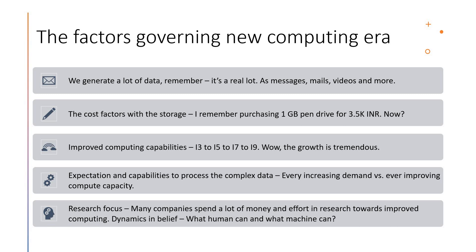The second factor is storage and the cost connected to it. I bought my first pen drive at 3,500 INR back in 2007, which was very expensive. But now with the same money you can buy a 1TB pen drive — the cost of storage has come down significantly. Computing capabilities have also improved tremendously, from i3 to i5, i7, and now i9, with further advances being discussed. The increasing demand versus computing capacity is a major factor — we always expect data to be processed faster, perfectly, and accurately.